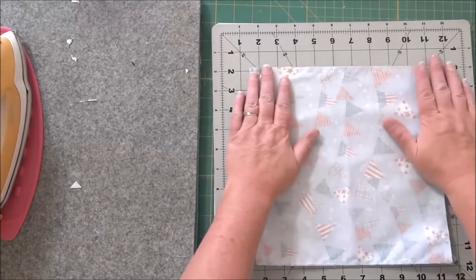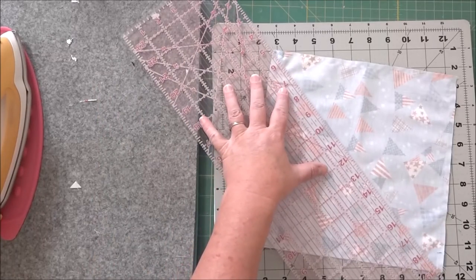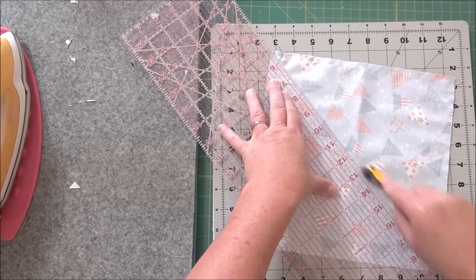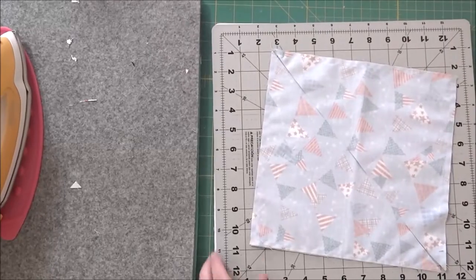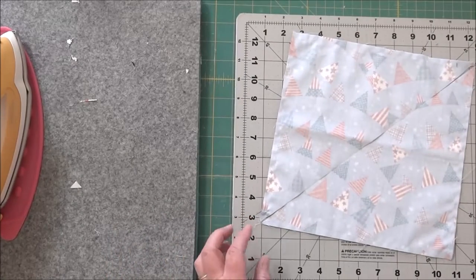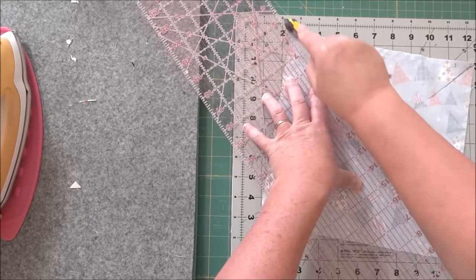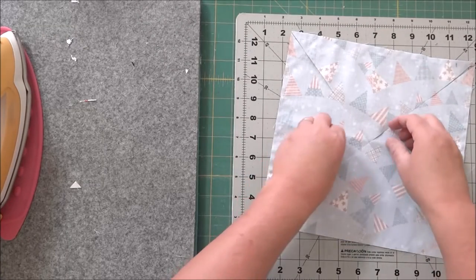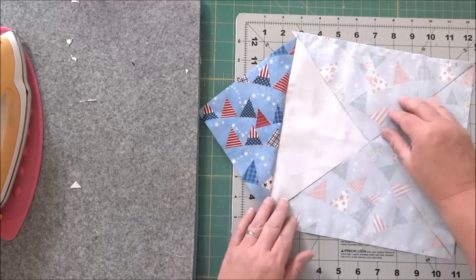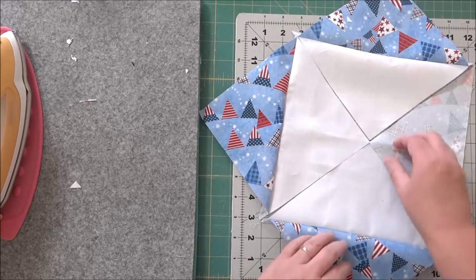Now that we have our block all sewn together, we're going to cut from corner to corner. You can use your long ruler or whatever you've got. I'm using a turntable mat so I can turn this around without having to move the block. This is going to give you four half square triangles. This is what we are going to sew together to make our pinwheel. Once we have this done we can go ahead and finger press or iron these blocks, and you can see that they are half square triangles.